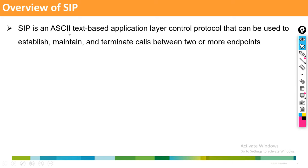SIP is an ASCII text-based application layer control protocol that can be used to establish, maintain, and terminate calls between two or more endpoints. To make a call we require two protocols: a signaling protocol and a streaming protocol. SIP is the signaling protocol — used to establish, maintain, and terminate the connection.